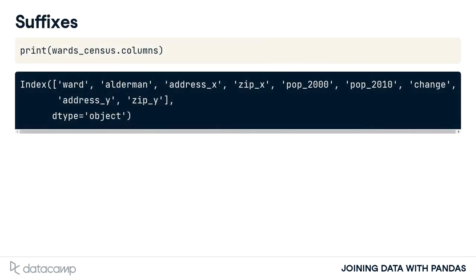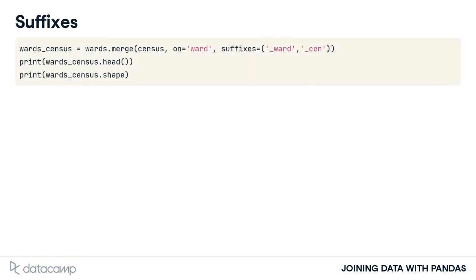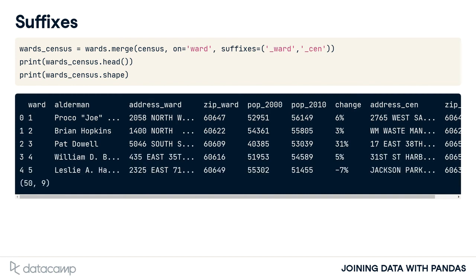You may have noticed that the merged table has columns with suffixes of underscore x or y. This is because both the wards and census tables contain address and zip columns. To avoid multiple columns with the same name, they are automatically given a suffix by the merge method. We can use the suffixes argument of the merge method to control this behavior. We provide a tuple where all of the overlapping columns in the left table are given the suffix underscore ward, and those in the right table will be given the suffix underscore cent. This makes it easier for us to tell the difference between the columns.